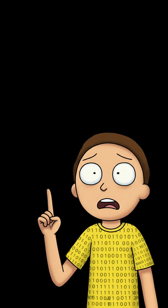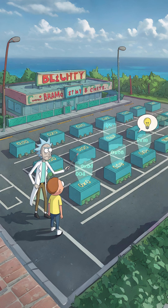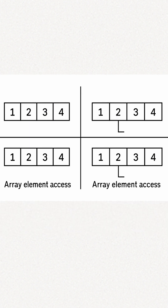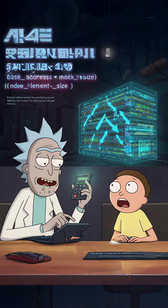Continuous memory — what does that even mean? It means the elements are stored right next to each other, Morty. Like parking spots at a Blips and Chitz. If you have an array of integers, and each integer takes four bytes, then element zero is at the starting address, element one is exactly four bytes later, element two is eight bytes from the start, and so on. The computer can jump directly to any position because it's just simple math, Morty! It's what makes arrays so damn fast.